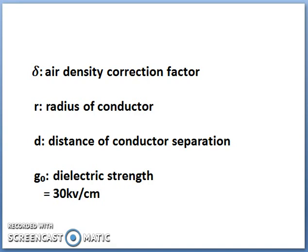The atmospheric conditions change — the temperature may vary and the pressure may vary. So you need to take a correction into account, which is taken care of by delta. The air density correction factor depends on pressure and temperature, and delta is given by 3.92B divided by (273 + T), where B is the barometric pressure in centimetres of mercury and T is the temperature in degrees centigrade.